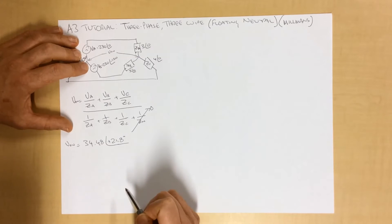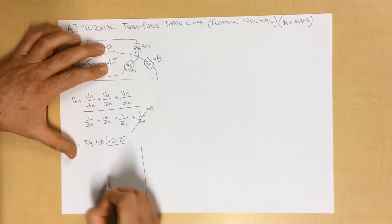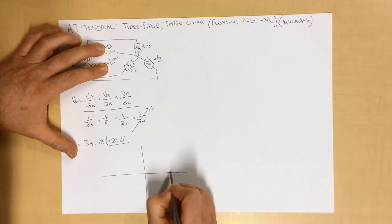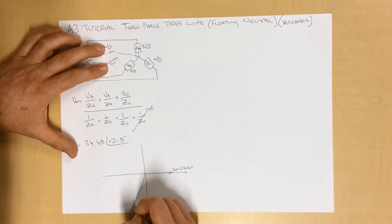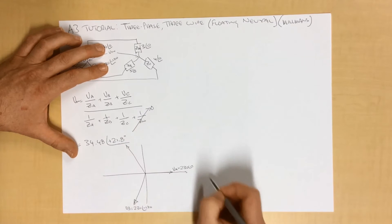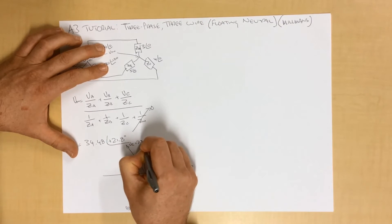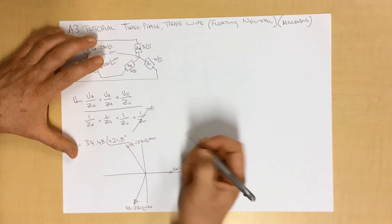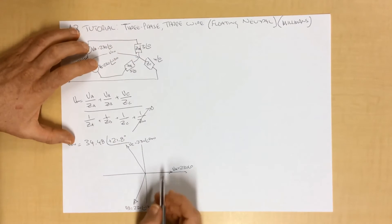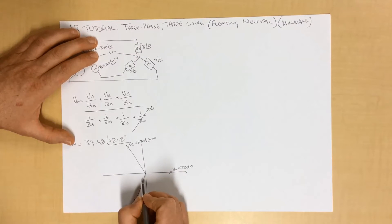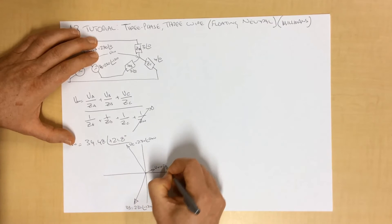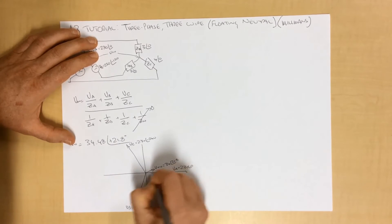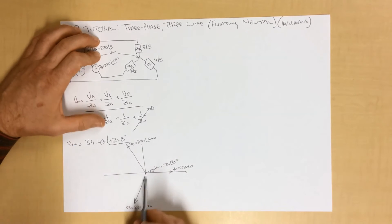So we could draw that in a vector form down here. So here we have VA, 230 at an angle of 0. Down here we have VB, 230 minus 120. And up here we have VC, 230 minus 240. And the voltage between here is 34 at 21 degrees. So we've got an angle of 21 degrees there.